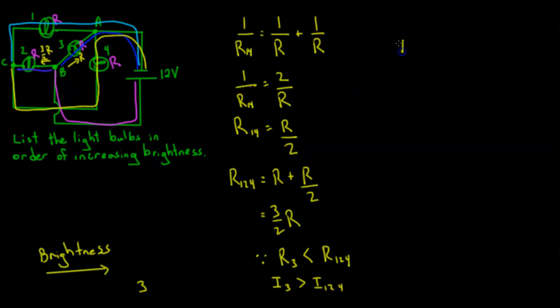Since the current splits, we know the current through I_2 is going to be greater than the current that either goes through 1 or 4. Since the current through I_2 is greater, the brightness is greater, so I'm going to put it here.